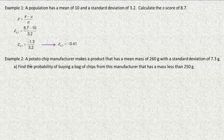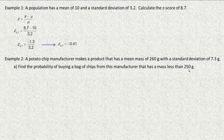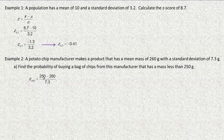In Example 2, a potato chip manufacturer makes bags with a mean mass of 260 grams and a standard deviation of 7.3 grams. Part A asks for the probability of a bag having a mass less than 250 grams. First, find the z-score of 250: 250 minus 260 equals negative 10, divided by 7.3, gives negative 1.37.